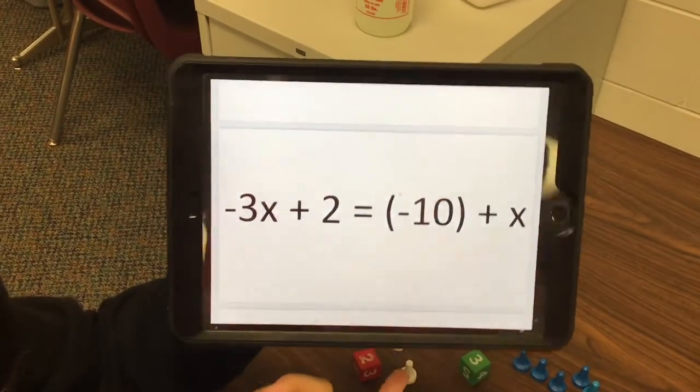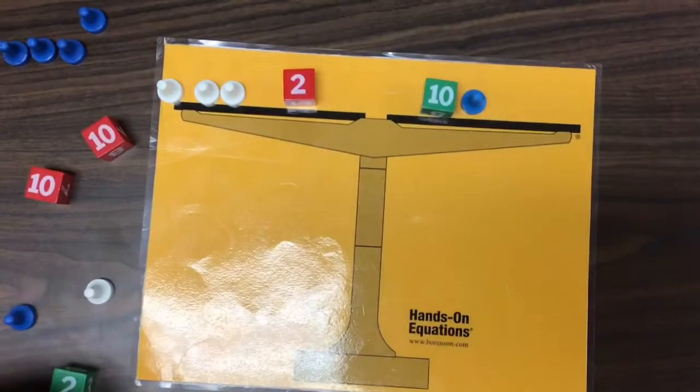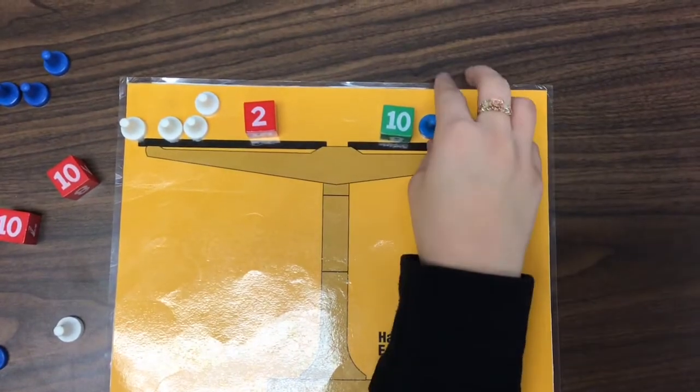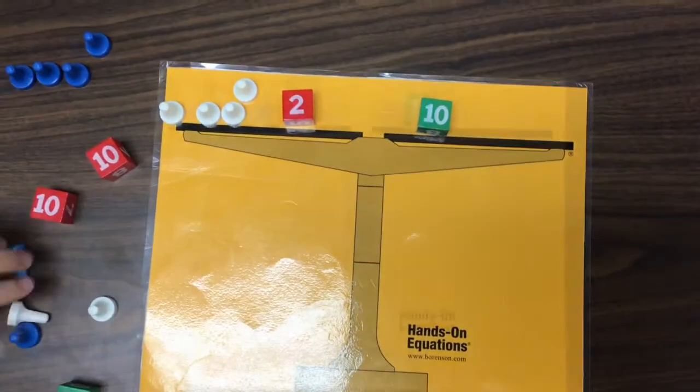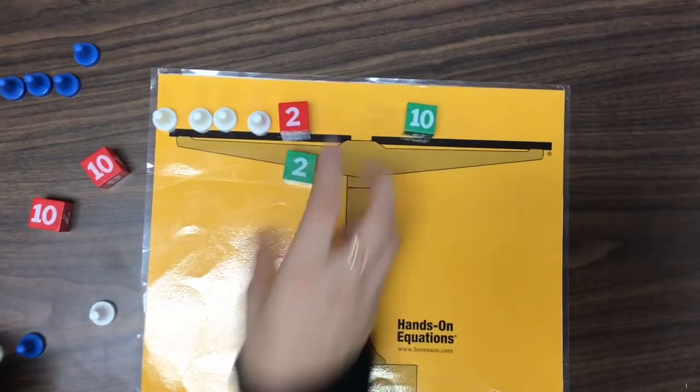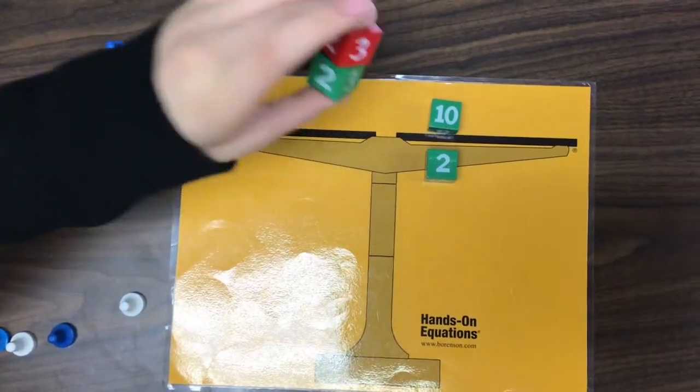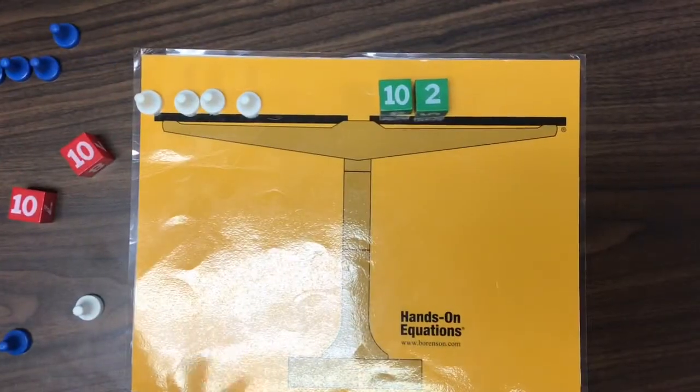My next problem is the opposite of 3x plus 2 equals negative 10 plus x. So, the next thing we're going to do is put a white pawn on each side, and then you can take that away. Then we're going to take a negative 2 and put it on both sides, and you can take that away. My answer is x equals 3.